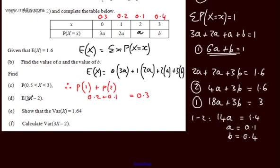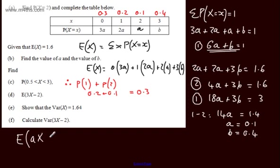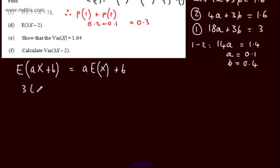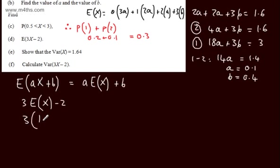We now need to find E(3x − 2). Using the rule E(ax + b) = a·E(x) + b, we have E(3x − 2) = 3×E(x) − 2 = 3×1.6 − 2 = 4.8 − 2 = 2.8. So the expected value of 3x − 2 is 2.8.